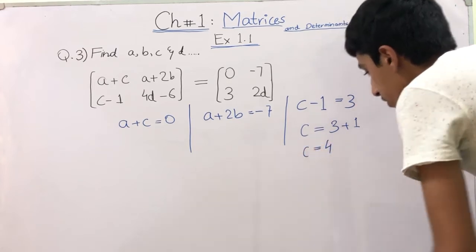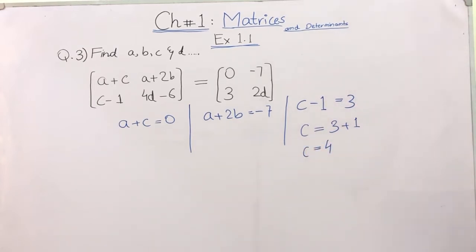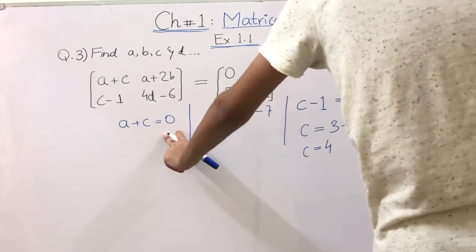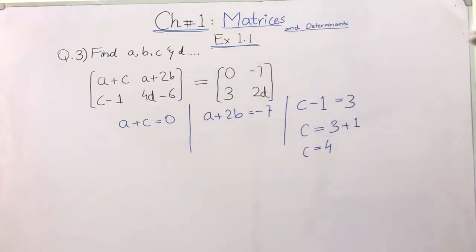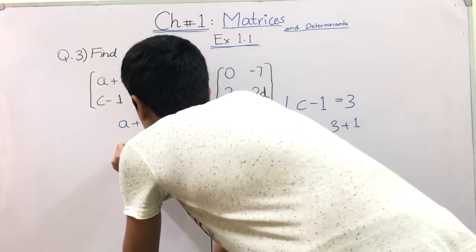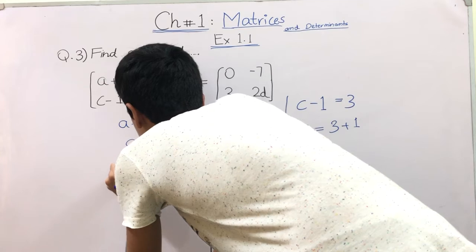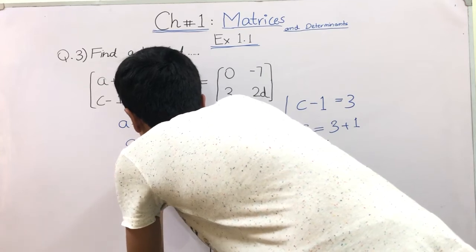Now in this equation, we have C is equal to 4. So we will put C value in equation 1. A plus 4 is equal to 0. A is equal to minus 4. We have substituted C and now we are aware of A value, which is minus 4.